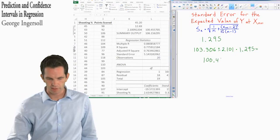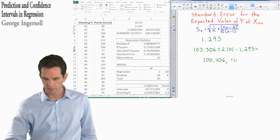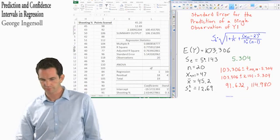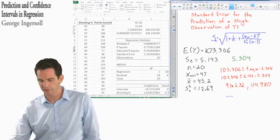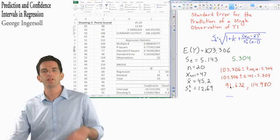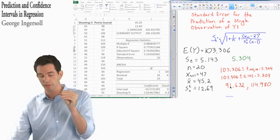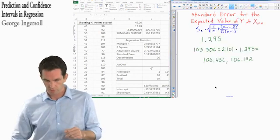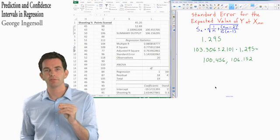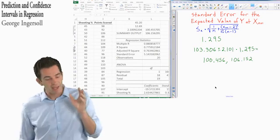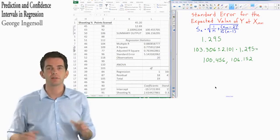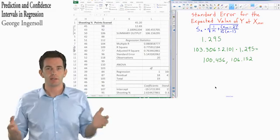Let's think about whether that makes sense. It's considerably narrower range. Our confidence interval around predicting a single instance of y is quite a bit broader, from 91 to 115. Versus our confidence around what we think the expected value of y is, at x equals 47, is 100.5 to 106. A lot narrower. Does that make sense? Yeah, it does.